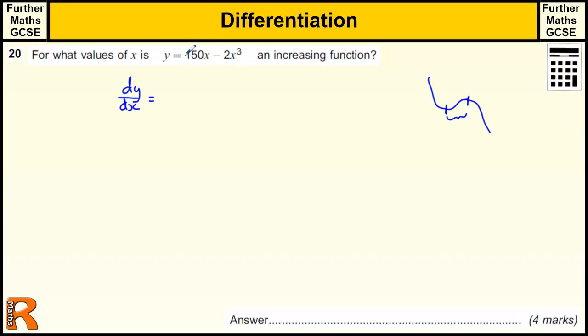So dy by dx of 150x. Well, we just reduce the power by 1, which makes x to the 0, and times by that power, so 1, that's 150. So that's just 150.